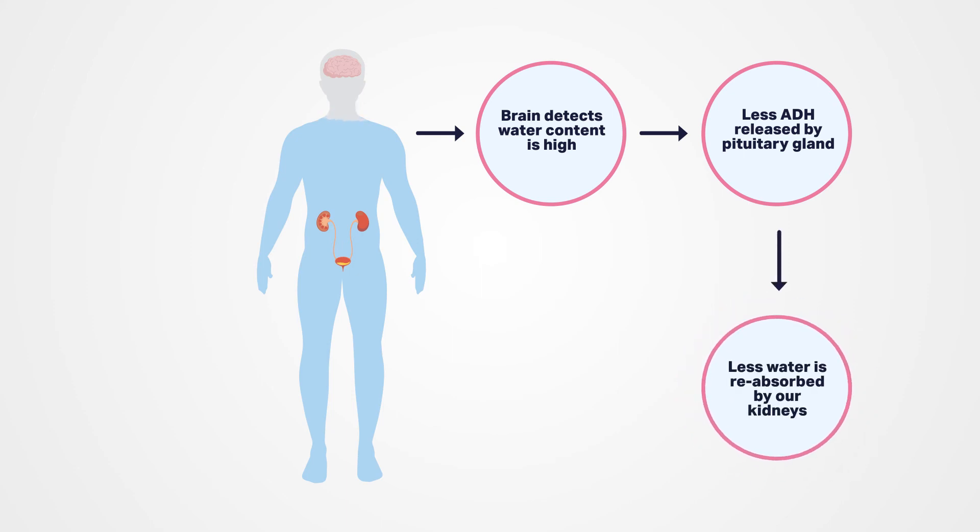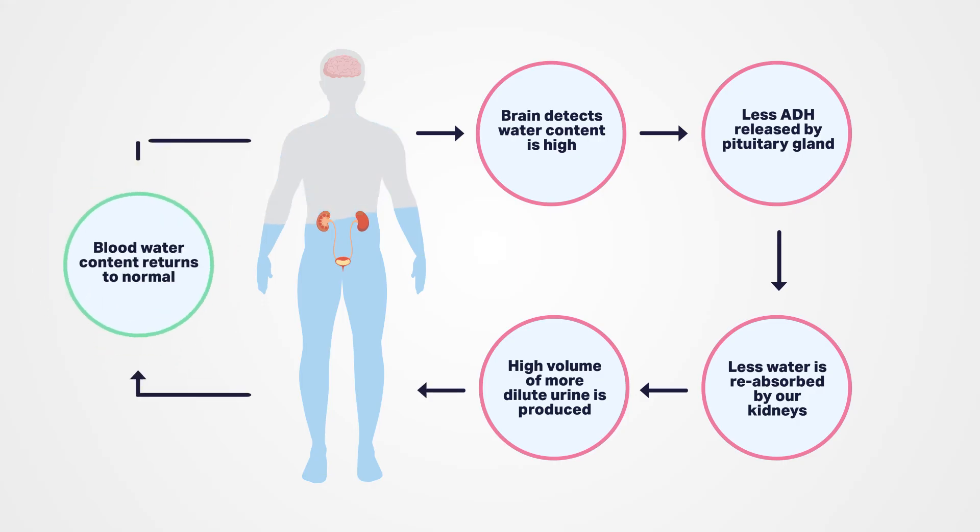So less water is reabsorbed from our kidneys and more dilute urine is produced. And once again, the blood water content returns to normal.